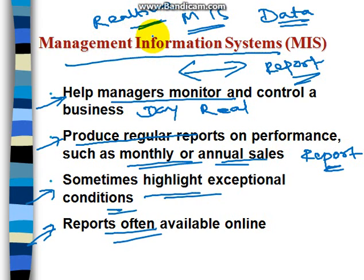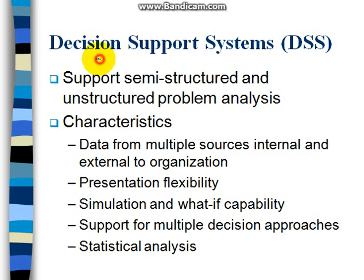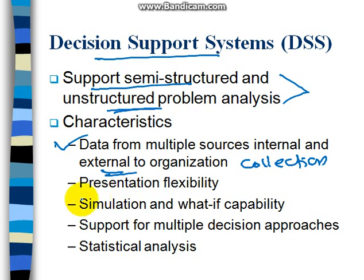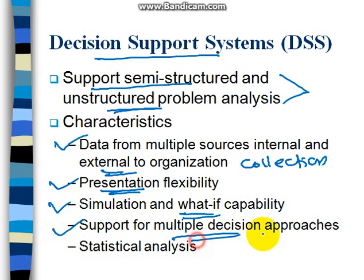The Decision Support System handles semi-structured and unstructured problem analysis. The characteristics of DSS include two types of analysis: semi-structured and unstructured. Data is collected from multiple sources, both internal and external to the organization. Then we have presentation flexibility, and then we undergo simulation of what-if analysis. What-if analysis simulation processes have to be carried out, along with support for multiple decision approaches and statistical analysis.